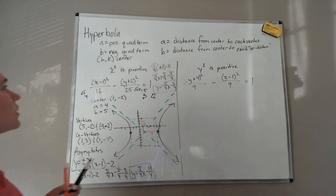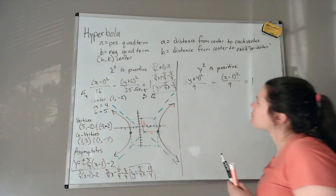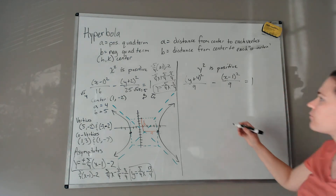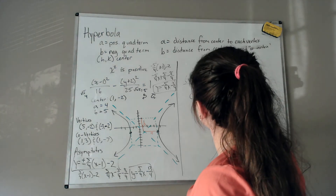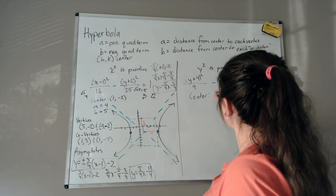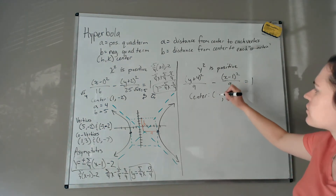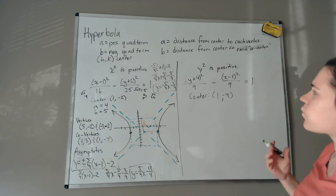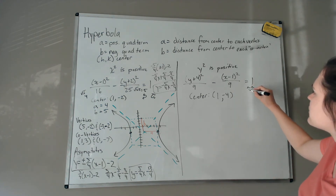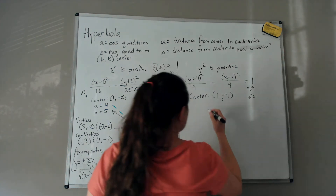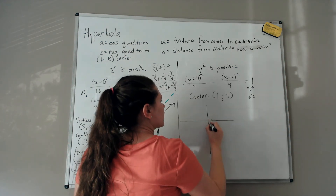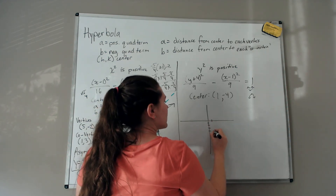For the second example, y-squared is positive. We identify the center: what makes the x-term zero is 1, the y-term zero is −4, so center is (1, −4). Since y-squared is the positive term, this hyperbola opens up and down.